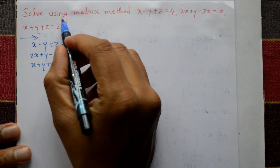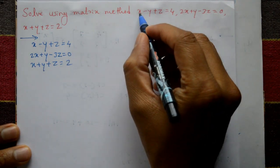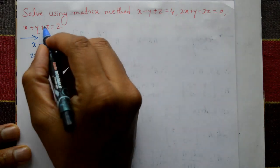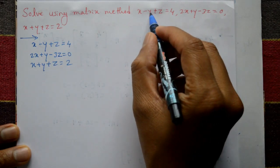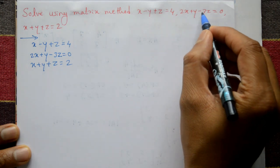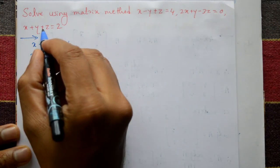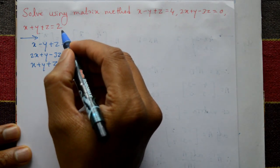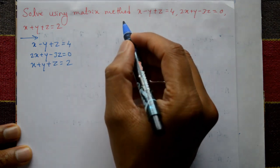Using the matrix method, three equations are given: x minus y plus z is equal to 4, 2x plus y minus 3z is equal to 0, and x plus y plus z is equal to 2. We will solve these by using the matrix method.